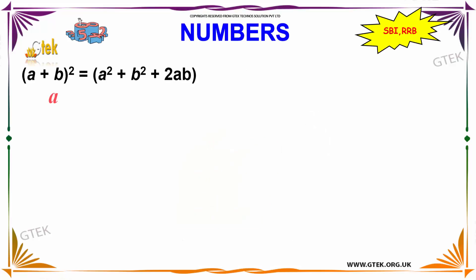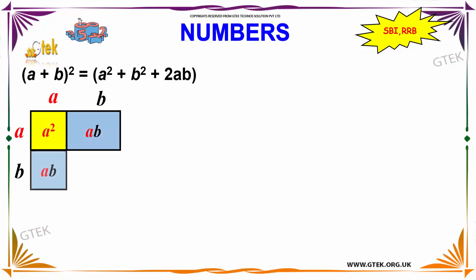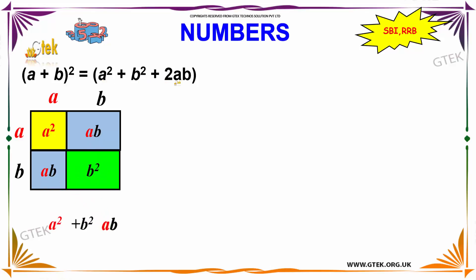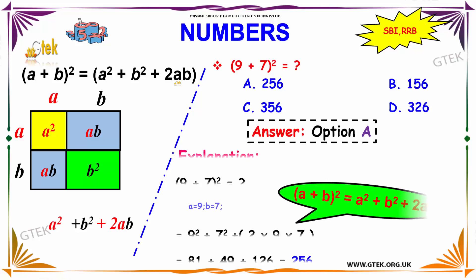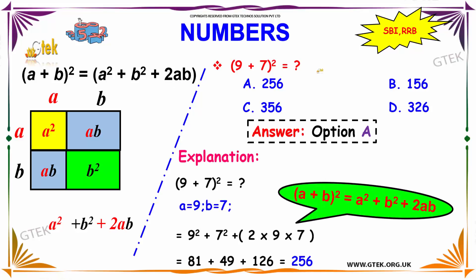The formula is: a plus b whole square is equal to a square plus b square plus 2ab. Let's go with the problem — 9 plus 7 whole square is equal to what?